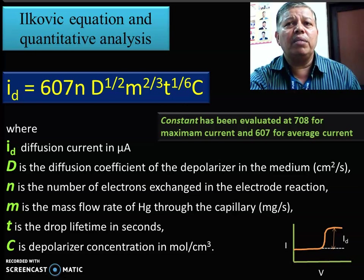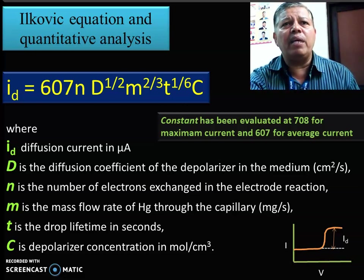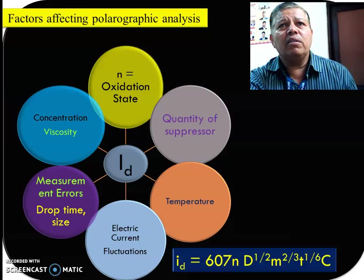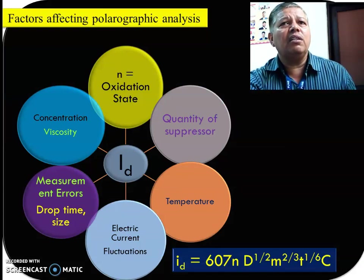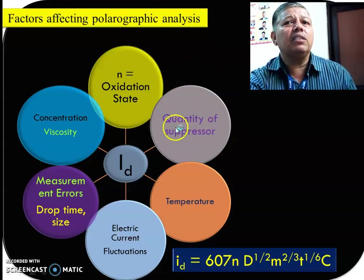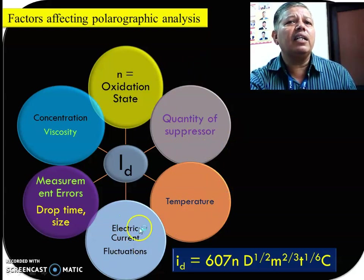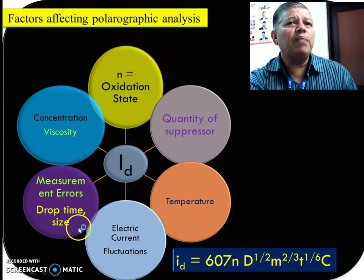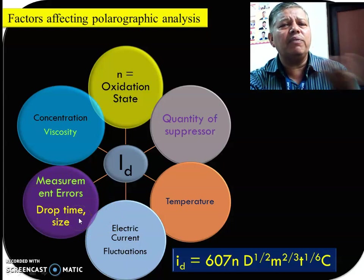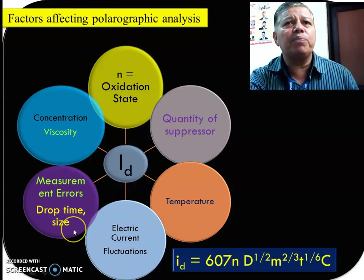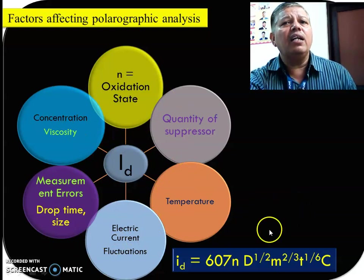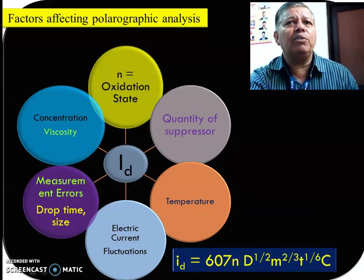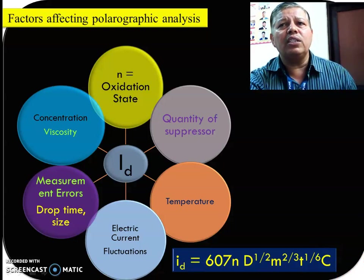This is a very important equation for the calculation of any variable. In the polarographic apparatus, some factors must be considered: the oxidation state of the element, quantity of the suppressor, temperature, electrical current, measurement errors like drop time and drop size — because it is very difficult to adjust drop time and drop size from the capillary — and concentration and viscosity, which are also most important. These factors must be maintained to accurately determine the concentration of the ion.